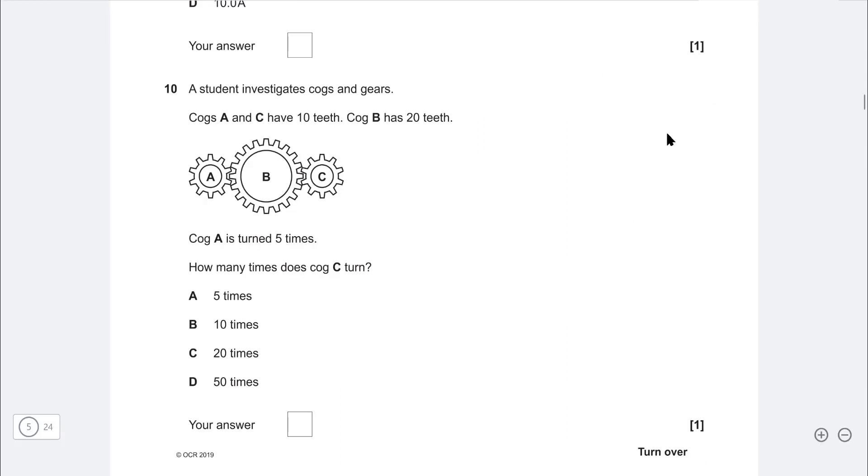Next one, a student investigates cogs and gears. So A and C have 10 teeth, while B has 20 teeth. So A is turned five times. If A is turned five times, this means that B, because it's twice as large, will turn two and a half times. But then, this one here is twice as small, so it's going to turn twice as fast, which is going to bring us to five yet again. Correct answer is A.